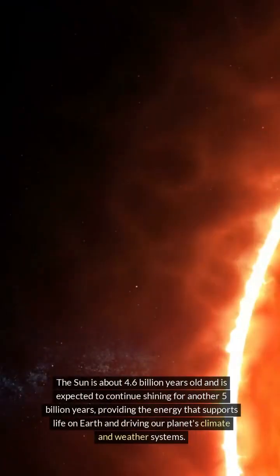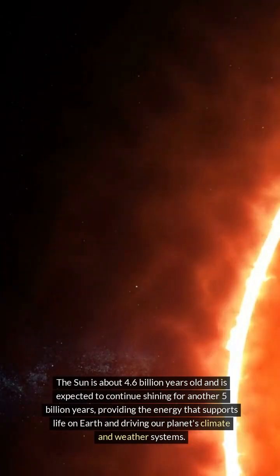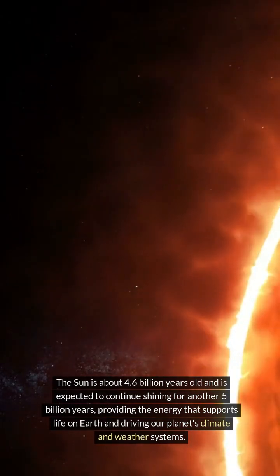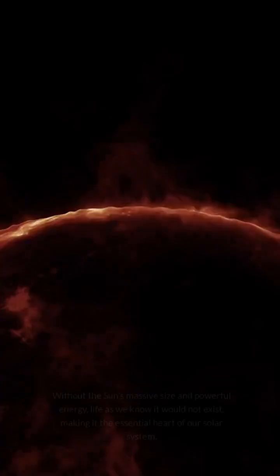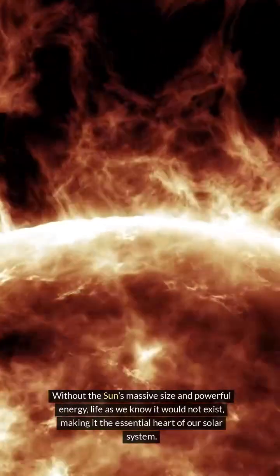The Sun is about 4.6 billion years old and is expected to continue shining for another 5 billion years, providing the energy that supports life on Earth and driving our planet's climate and weather systems. Without the Sun's massive size and powerful energy, life as we know it would not exist.